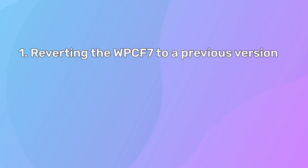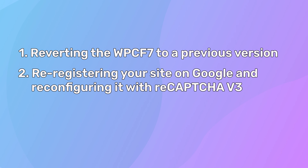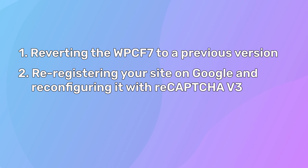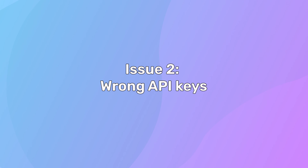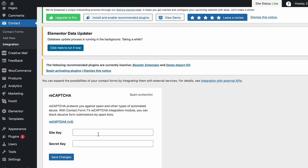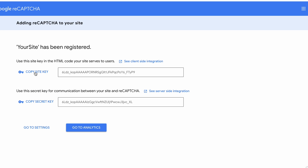You can solve this version mismatch issue in three ways: by reverting your contact form 7 to the previous version, by re-registering your site on Google and reconfiguring it with reCAPTCHA version 3, or by using an additional plugin that supports reCAPTCHA version 2. Another common cause is the wrong site key or secret key. It's common to accidentally paste wrong values — for example, pasting the site key into the secret key field or vice versa, or adding an extra space or character. Simply check the values in WordPress against what's shown on the Google reCAPTCHA admin console, or delete and re-paste them. Always copy and paste rather than typing manually.